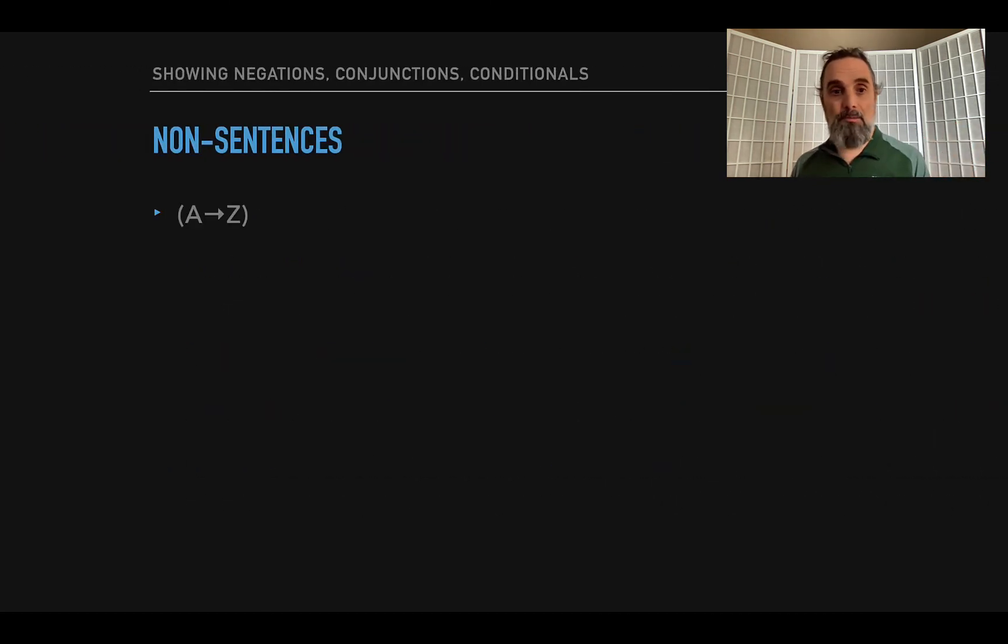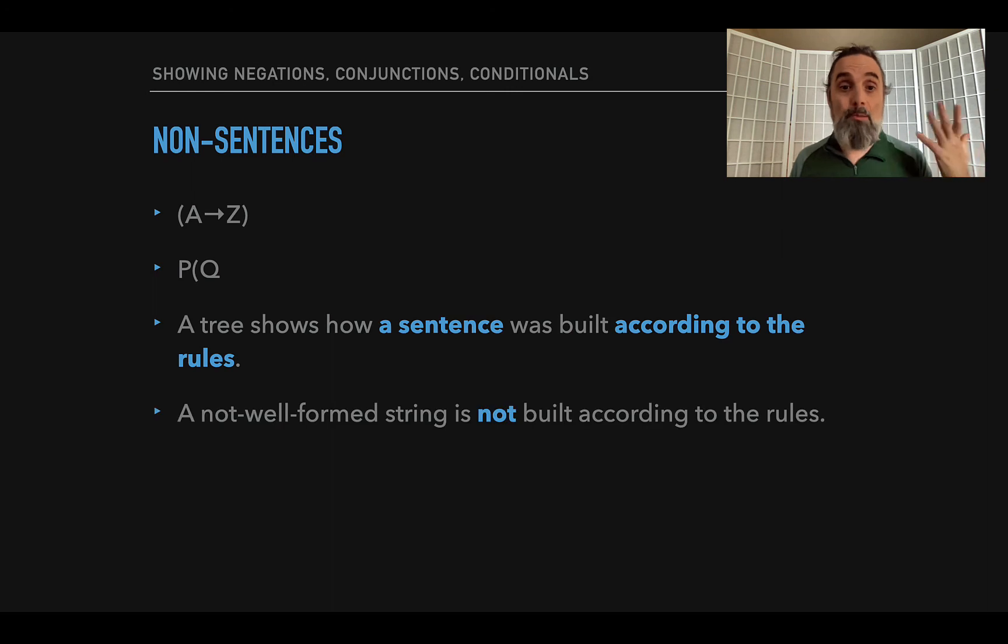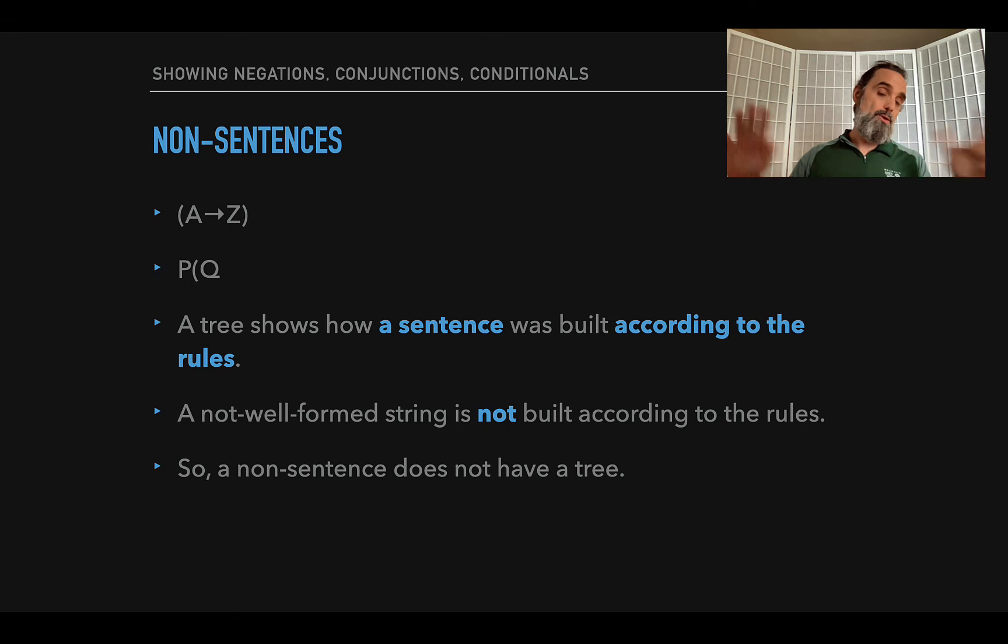Now, if it's not well-formed like this, this looks like a sentence, A arrow Z with parentheses around it, but it's not, because A is not a sentence letter, right? Sentence letters are just P through Z. This is obviously not a sentence, okay? There's no tree to be constructed for either of these. Why? Well, because a tree shows how a sentence was built according to the rules. But those aren't sentences, because they weren't built according to the rules, and so there's nothing to show about how they were built according to the rules. So there's no parsing tree at all. A not well-formed string is not built according to the rules, and so there's no parsing tree.